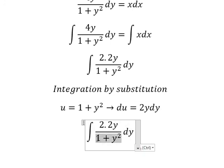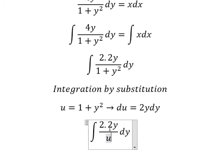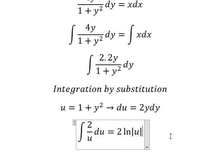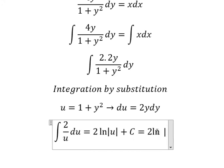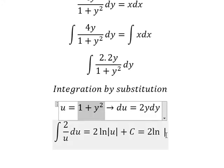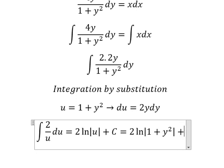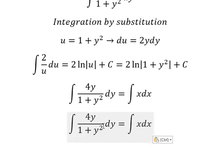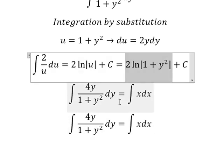This one we change by u. The integration of this one, we have 2 ln of the absolute value of u, and we put c. u is this one. This one is this one.